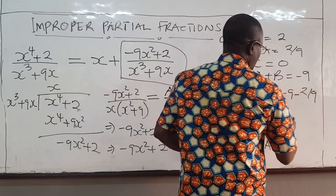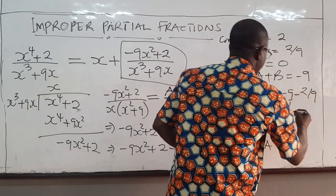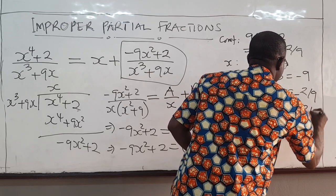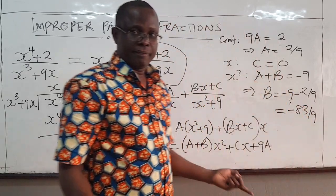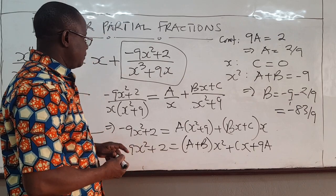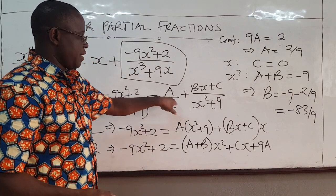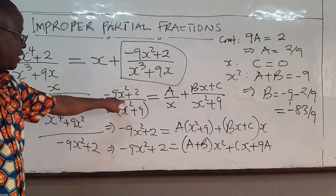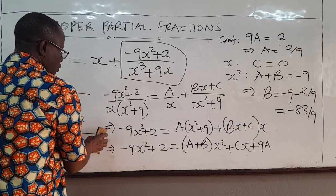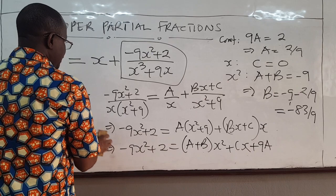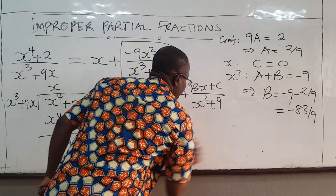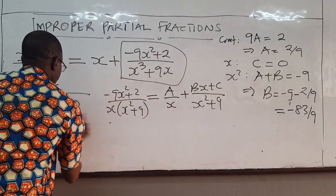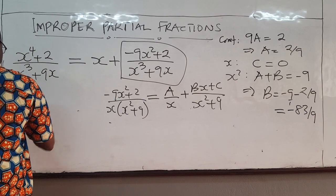So that gives you negative 83 over 9. So we have our constants now. So we can put them in here to get the partial fraction for this. So I am going to get rid of these guys here.